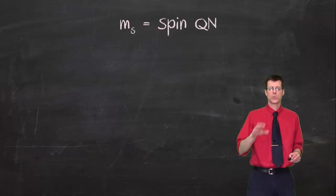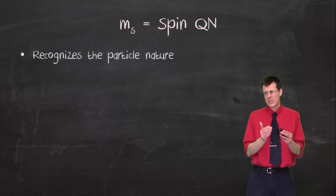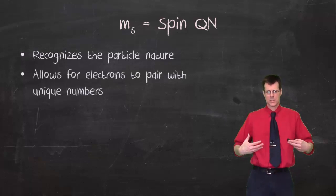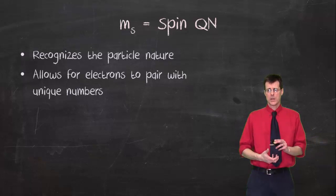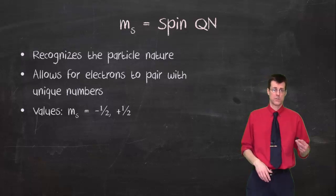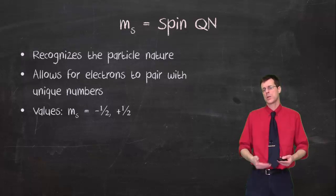The last one, which is not required by the Schrodinger wave equation, but is required by something else, it actually recognizes the particle nature. And it also allows the electrons to form pairs that have different quantum numbers. Same orbital, same sub-energy level, same orientation, but now a different spin on them. So then we use possible values of plus 1 half or minus 1 half. I suppose that's somewhat arbitrary because it's not like it's half of anything, but plus 1 half or minus 1 half.